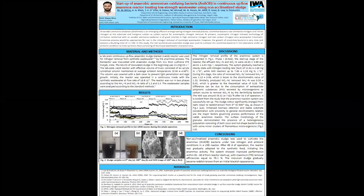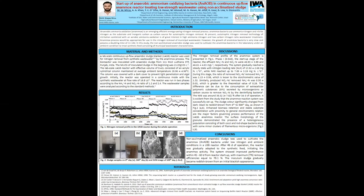It is concluded that non-acclimatized anaerobic sludge was used to cultivate anammox bacteria in a UASB reactor using synthetic feed under ambient temperature conditions. After 70 days of operation, the reactor started gradually to adapt to the synthetic feed, initiating anammox activity. The system showed improved performance with a maximum total nitrogen removal efficiency of 78%. The anammox sludge gradually became reddish brown from an initial blackish appearance.